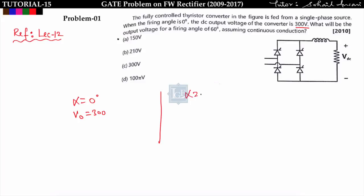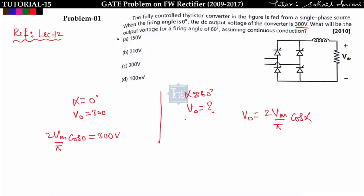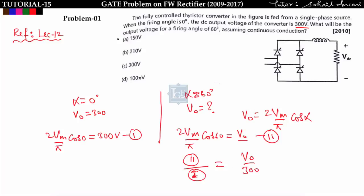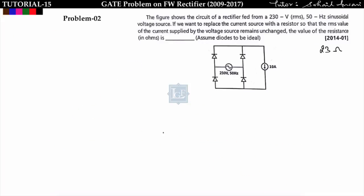We need to find the output voltage when α = 60°. The formula for output voltage of a single-phase full bridge converter is V_out = (2·V_m / π)·cos α. Dividing the equation for α = 60° by the equation for α = 0°, we get V_out / 300 = cos 60° / cos 0° = 1/2, so V_out = 150 volts. Option A is correct.